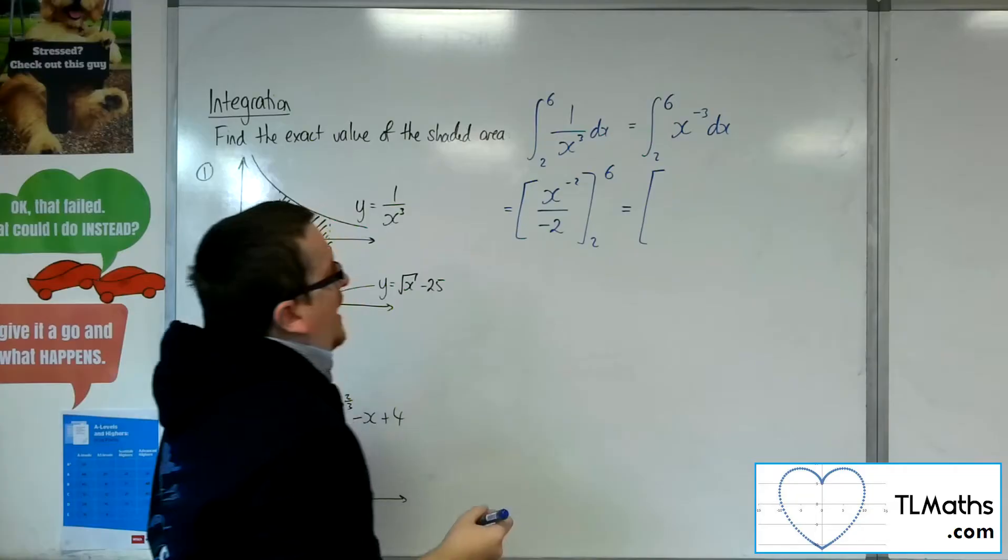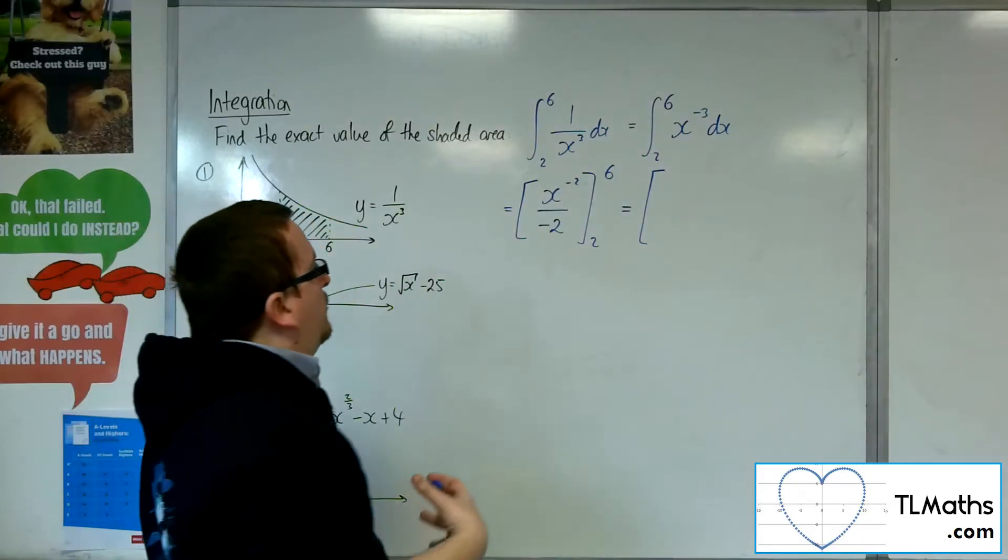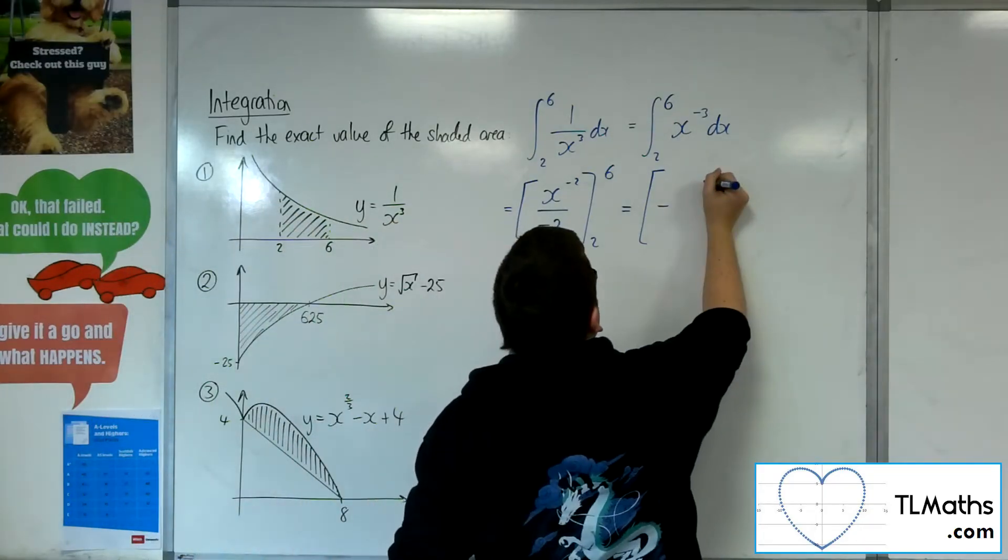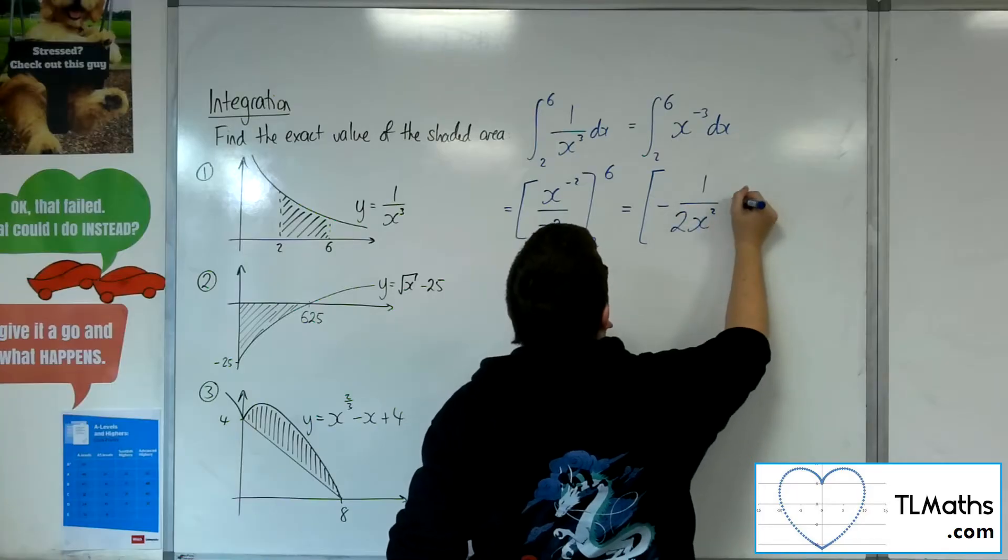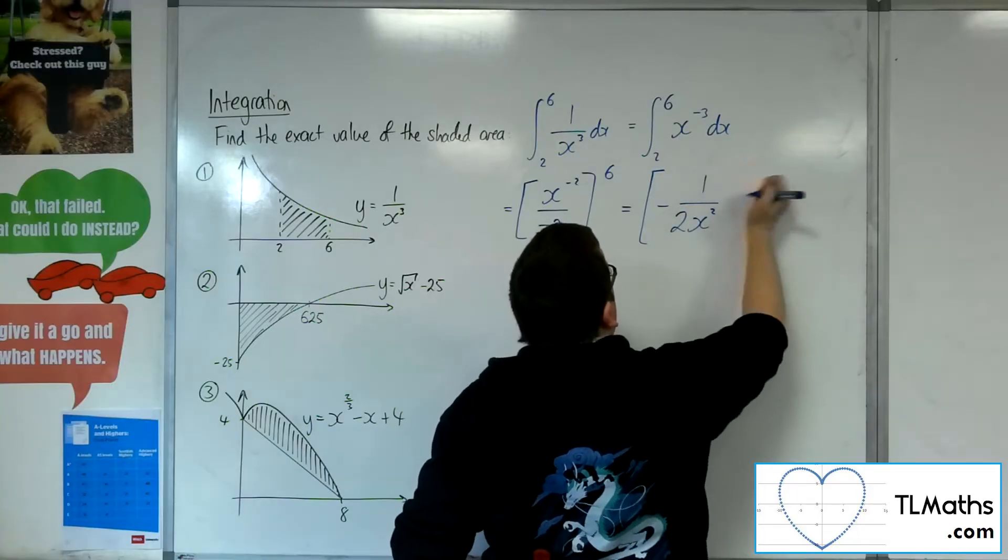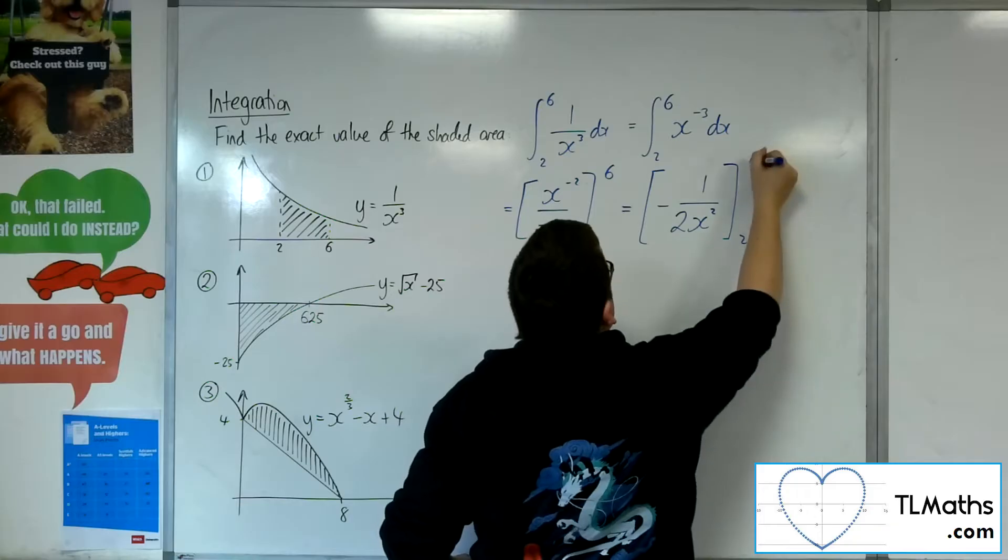So what is that? Well, x to the minus 2 is 1 over x squared, so that's minus 1 over 2x squared. Not dx, don't want to put that in there.